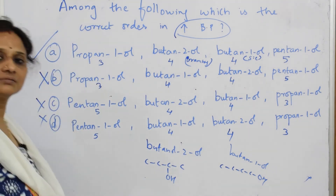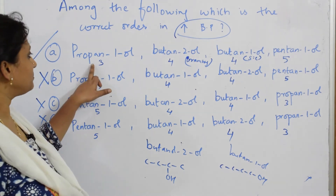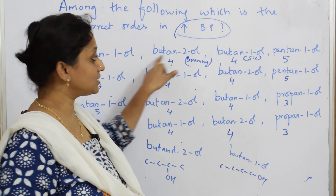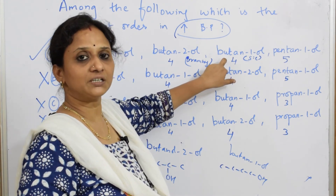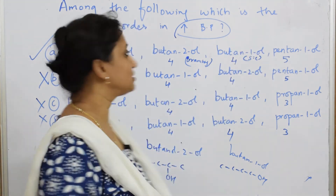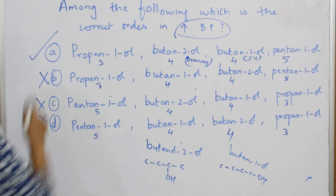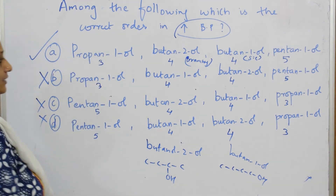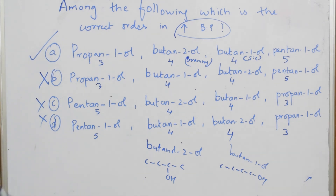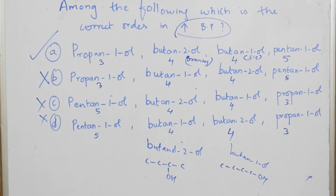So the first order is correct. Remember: based on the carbon chain, smaller means lesser boiling point. Based on branching, lesser boiling point. The increase is because of the increase in carbon chain. The first order is the correct order — put a tick and that is your answer.